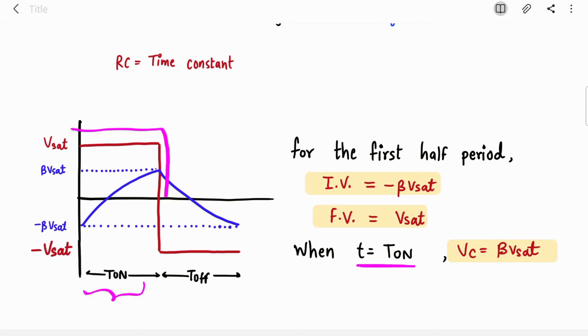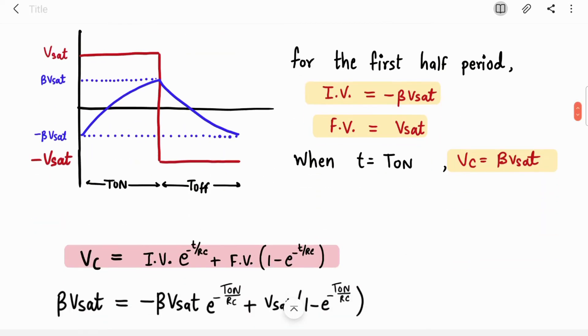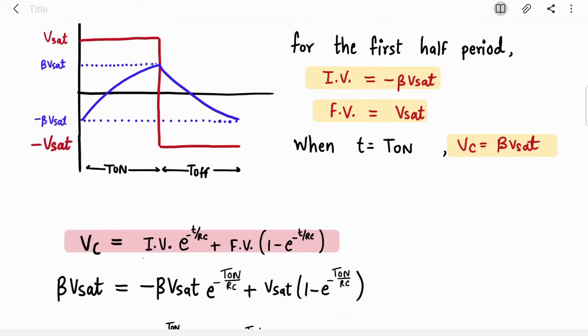We are considering the time frame of T on. The final voltage is Vsat, and VC is beta Vsat value. Let's substitute these values. Your initial voltage is minus beta Vsat, your final voltage is Vsat, T is replaced by T on, and VC is beta Vsat.